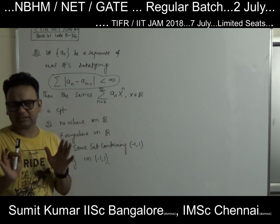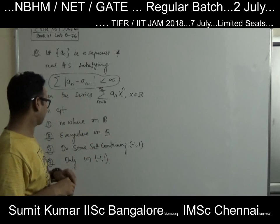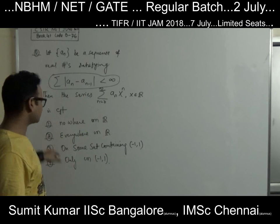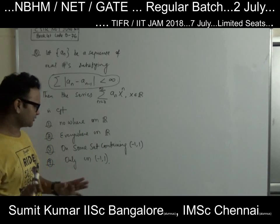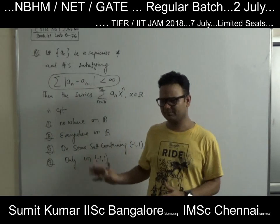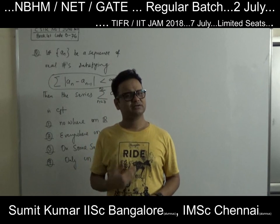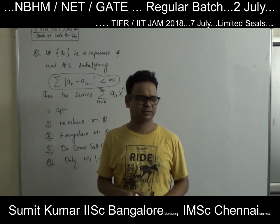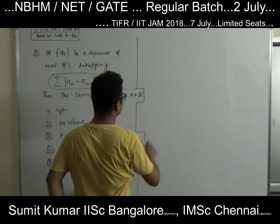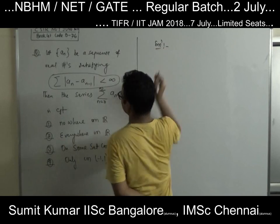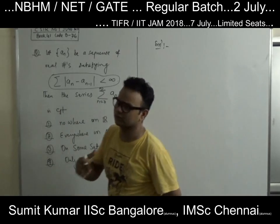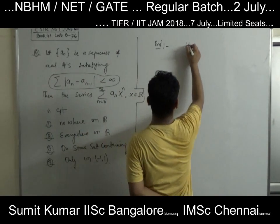The most difficult part is distinguishing between options 3 and 4 — that's always the difficult choice. For the first two options, you can look for examples, that's not a big issue. But even so, constructing such examples is not always easy. So let's try to understand the concept involved and go through it. How should one approach these kinds of questions? What should we be thinking, and how should we follow the path?